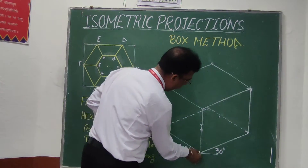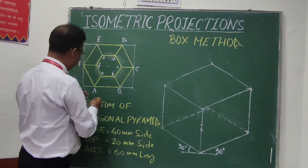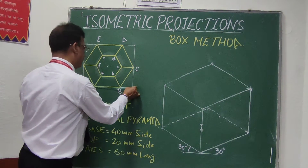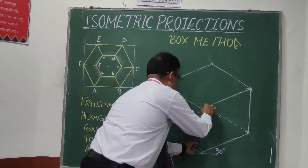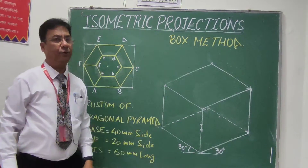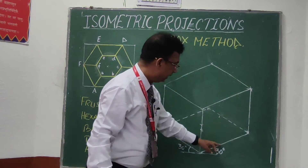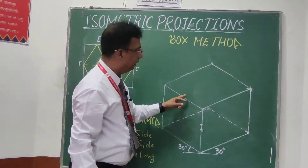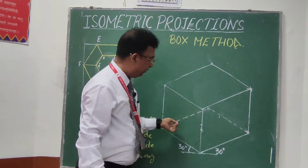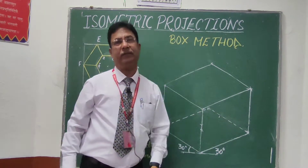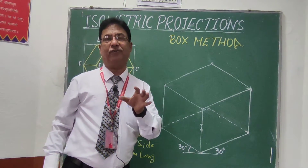Starting from the bottom, I will select two 30° axes and a third axis at 90°. I will place the length of one side on one line, the length of the opposite side on the other line, and the height of 60mm on the vertical axis. After drawing the first lines, I draw parallel lines to complete the cuboid. The lower part is also marked with dotted lines, as we may require one or two points on the bottom side. This completes the box in which the hexagonal pyramid frustum will be bounded.